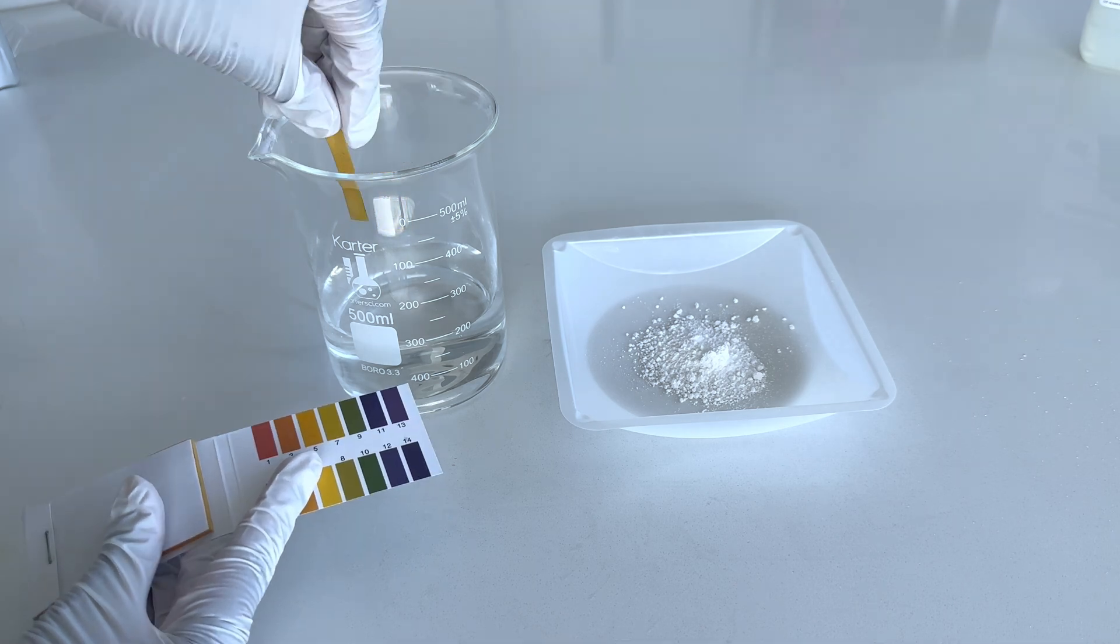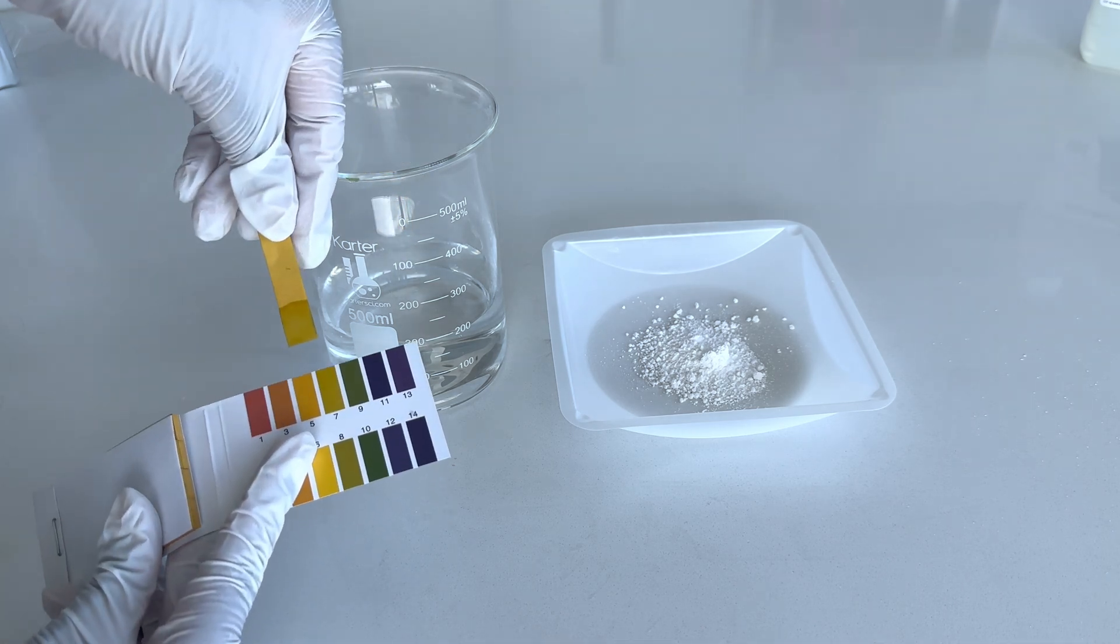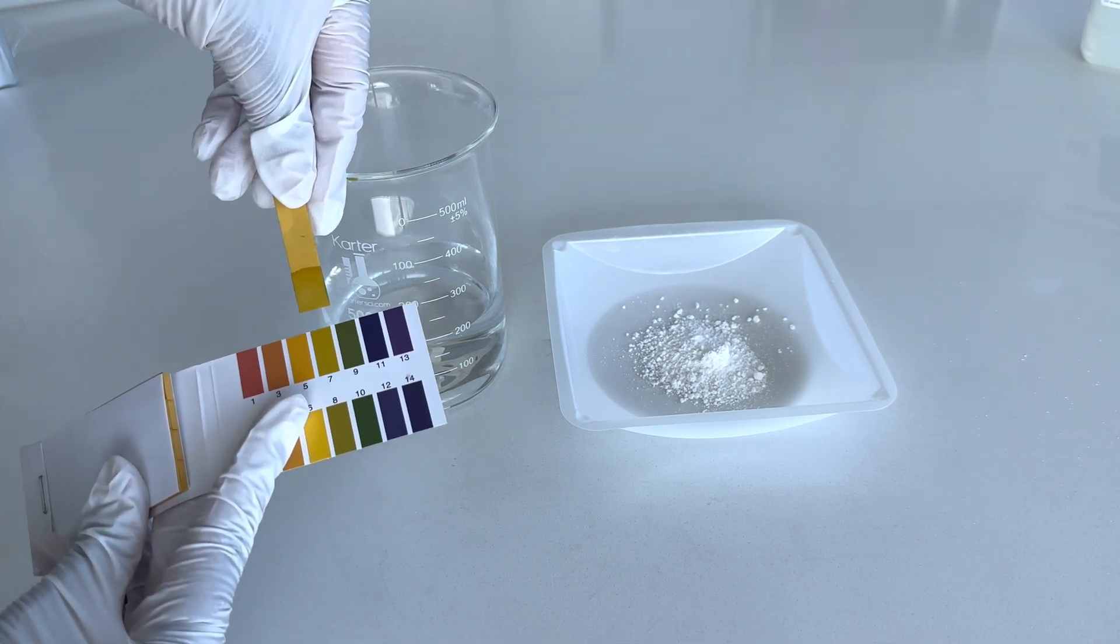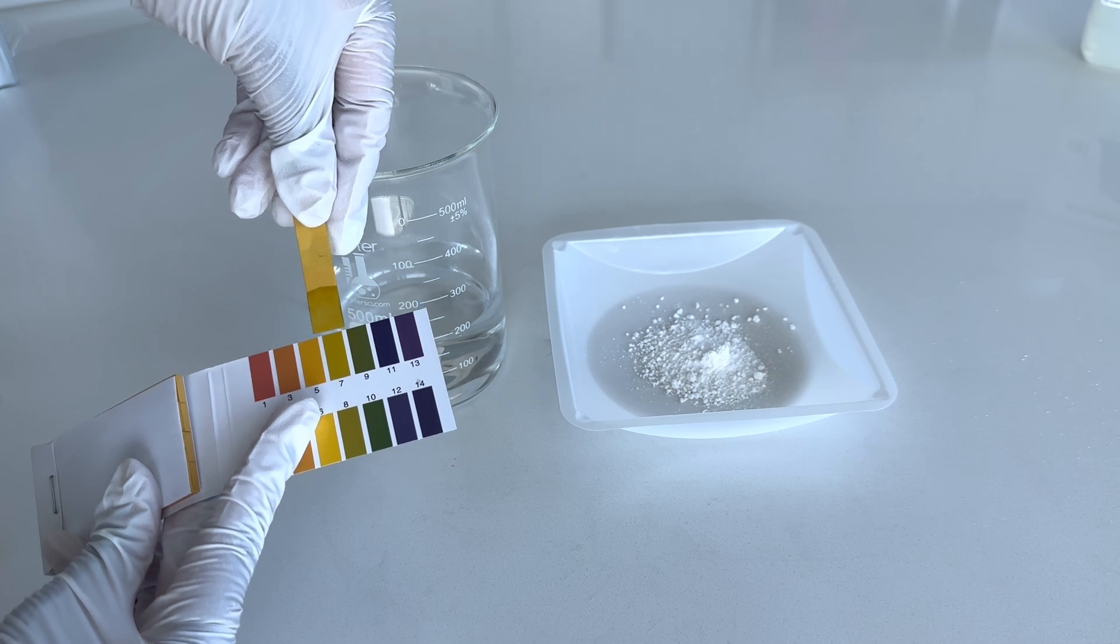I then check the pH of the water. As you will see later on, Carbomer will change the pH, but the pH of the water is 7, which is neutral as to be expected.